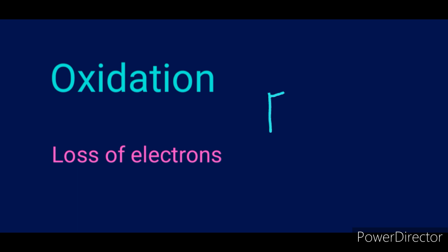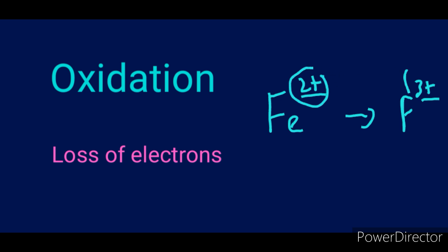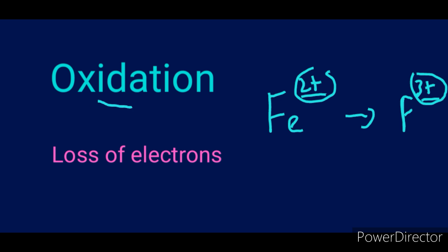Let's look at iron for instance. Let's say on the left side of the equation the charge was 2+ and on the right side it became 3+. It increased in the positive direction. Whenever the charge increases in the positive direction we call it oxidation — the loss of electrons. The atom has been oxidized.